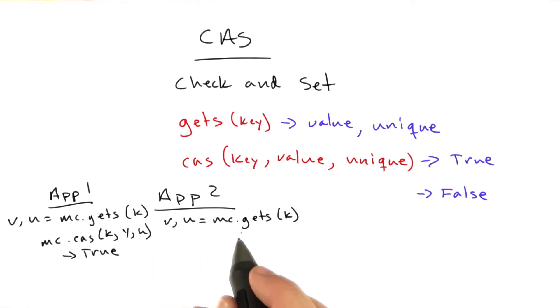And if this guy tries to do the same thing, Memcached will only accept one write at a time. It does it very fast, but only one write at a time. So if this guy tries to run the exact same code, mc.cas, we're going to set key to a variable stored in y, passing in u, this one will return false because this app server got there first, and the unique value stored in Memcached changed.